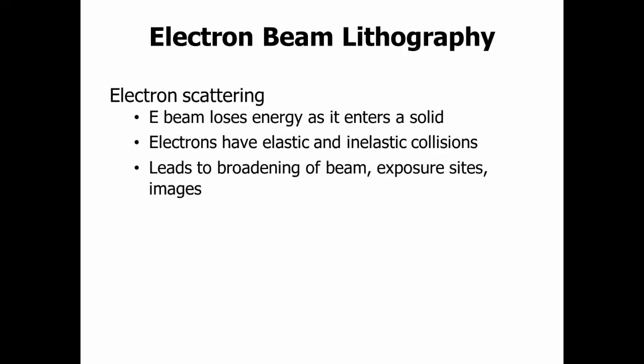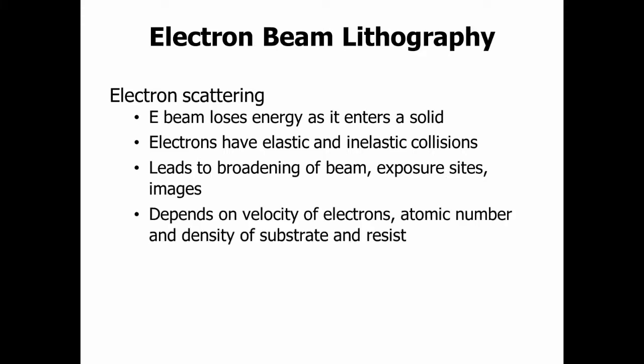Electrons lose energy as they enter a solid. They can have collisions — both elastic and inelastic — which can lead to the broadening of the beam and therefore the site and the image. Depending on the velocity of the electrons, the substrate you're working with, and the actual chemical, all of these factors change how much the electrons scatter.